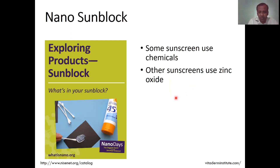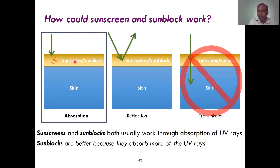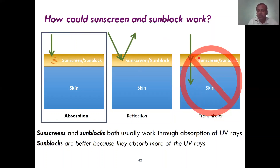How does it work? When rays fall on the skin, it absorbs the light. When we apply a coating of sunscreen or sunblock, they either absorb the rays or reflect the rays, which helps prevent sun rays from reaching the skin and reduces transmission of sun rays. Slots are always better because they absorb more of the UV rays than sunscreen. This is the application of sunblock.